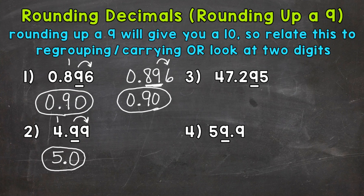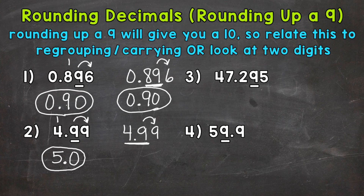Let's try it the other way. So 4 and 99 hundredths, we're rounding to the nearest tenth. Look to the right — we round up. Take a look at two digits here. Think of that like 49. If we round up 49, we get 50. But don't forget the decimal in between the 1s and tenths place. So we get 5 that way as well.